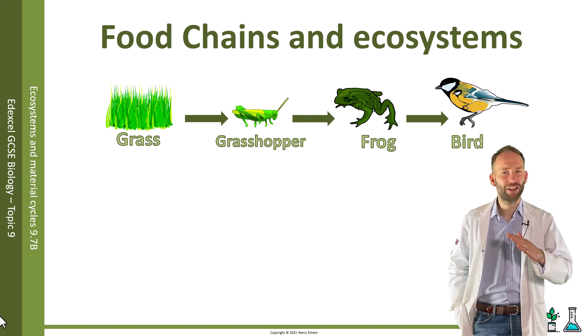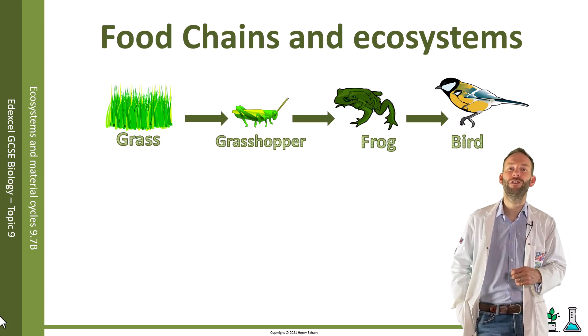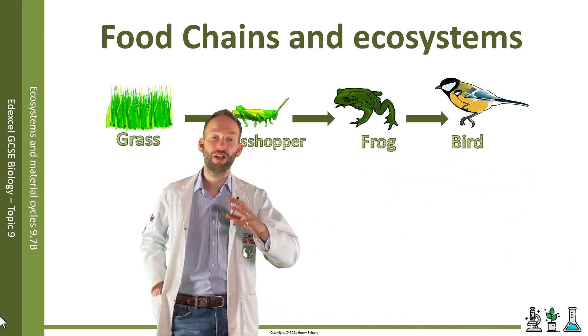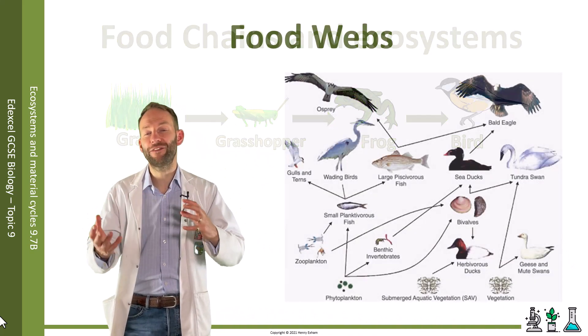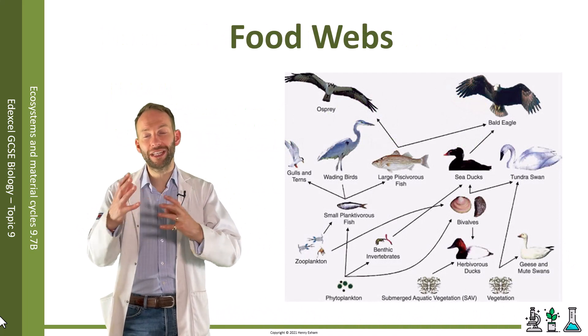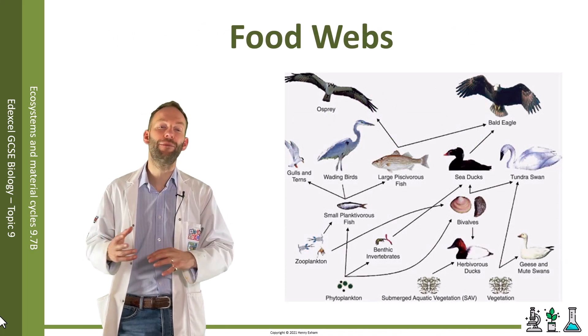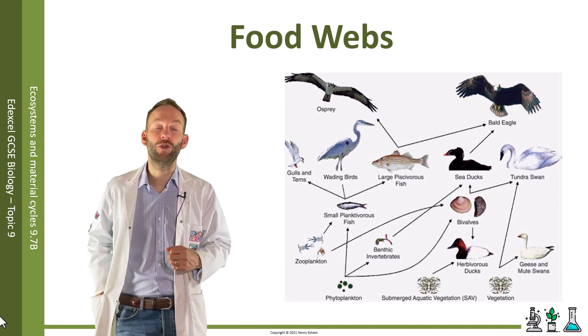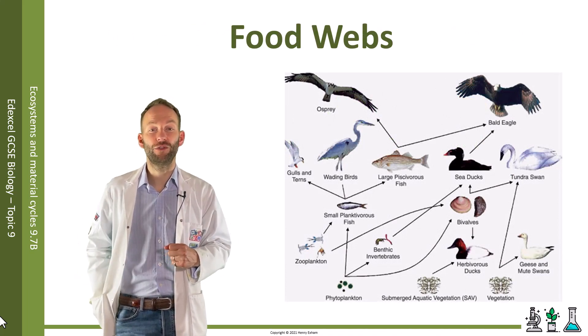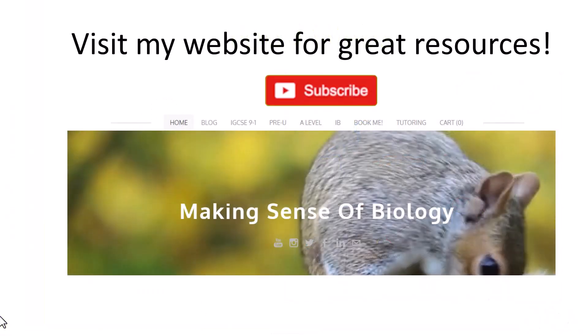In reality, you don't just get one food chain in an ecosystem. You've got many food chains, and they all interlink and overlap to form what we call a food web.